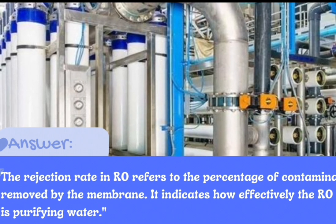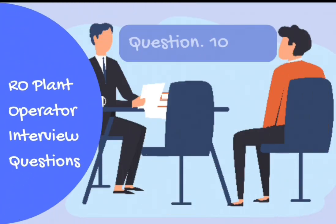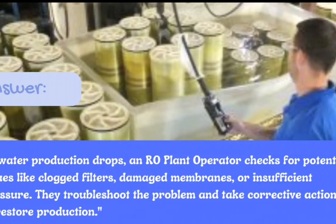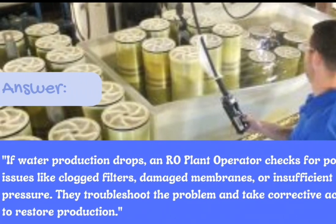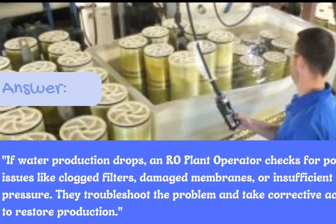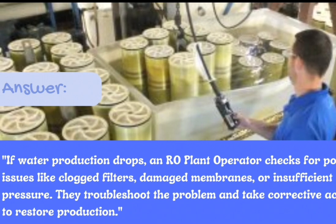Question number 10: How do you handle a drop in water production? Answer: If water production drops, an RO plant operator checks for potential issues like clogged filters, damaged membranes, or insufficient pressure. They troubleshoot the problem and take corrective actions to restore production.